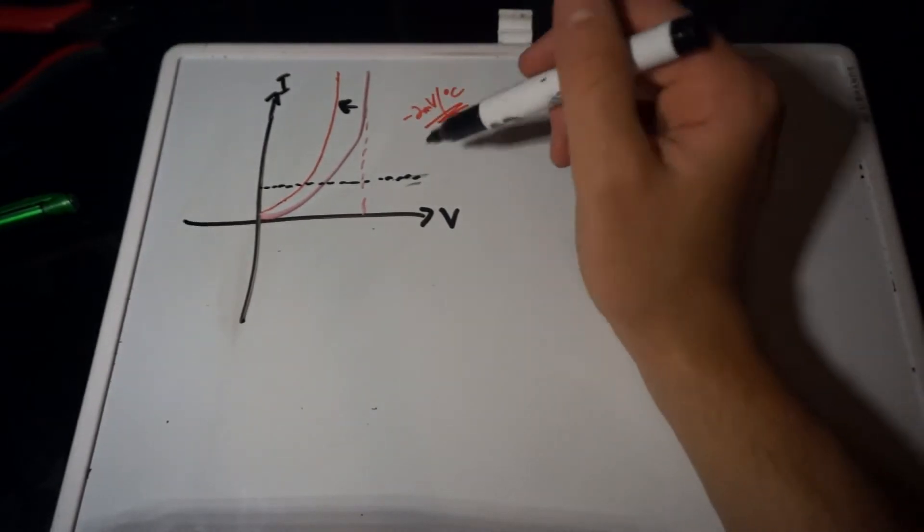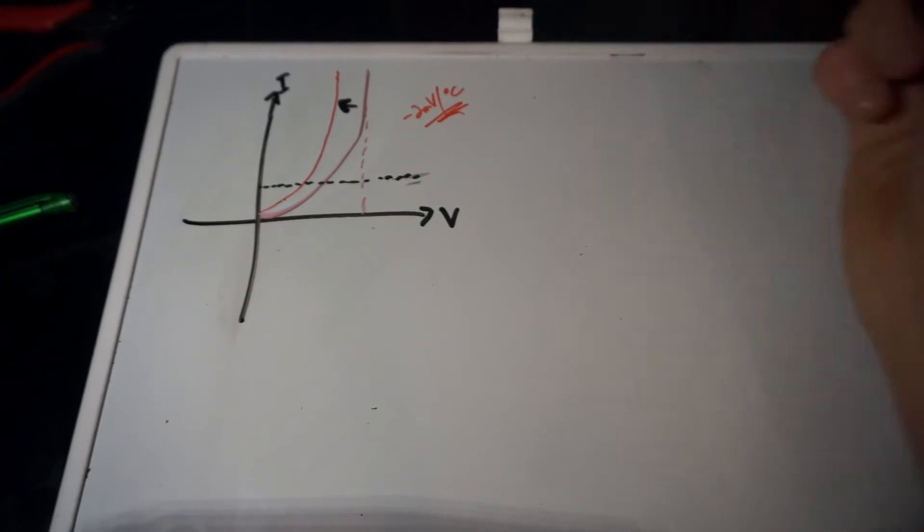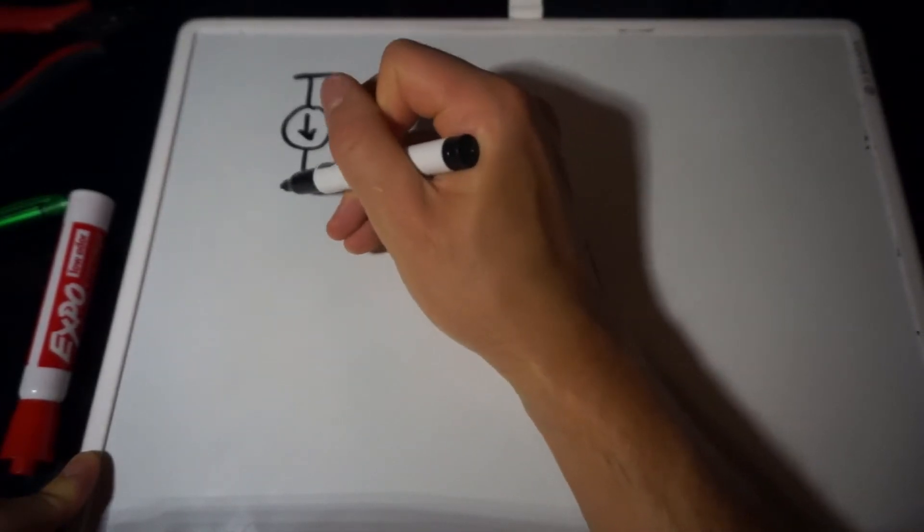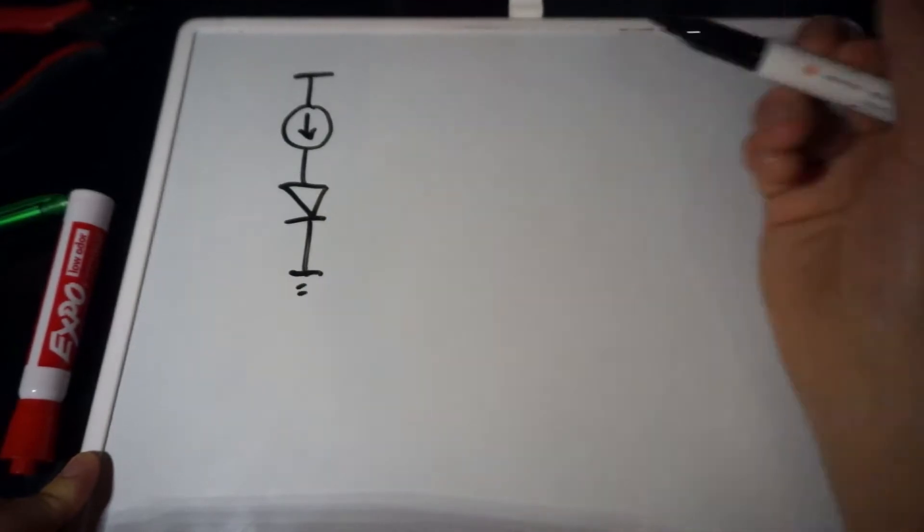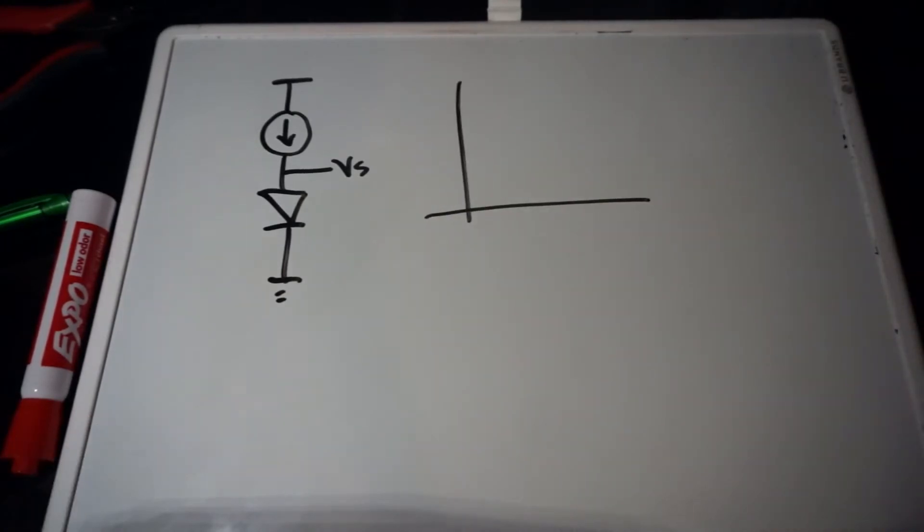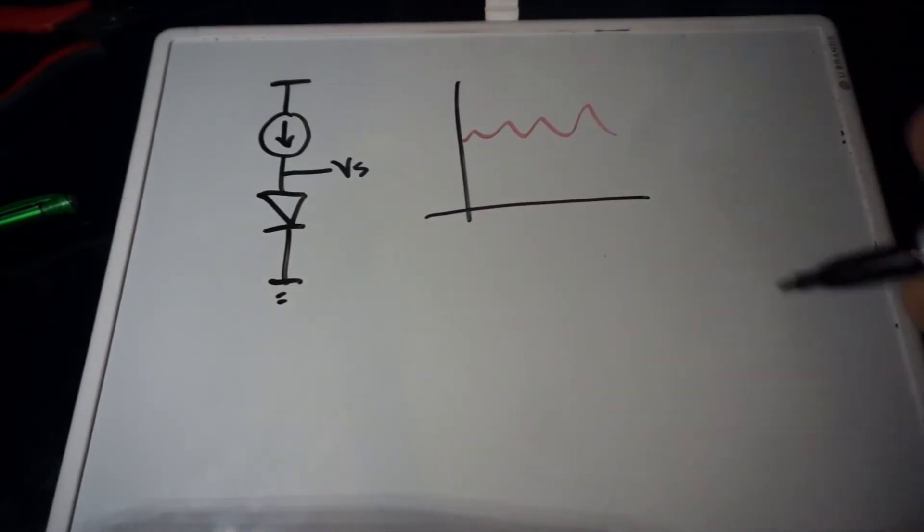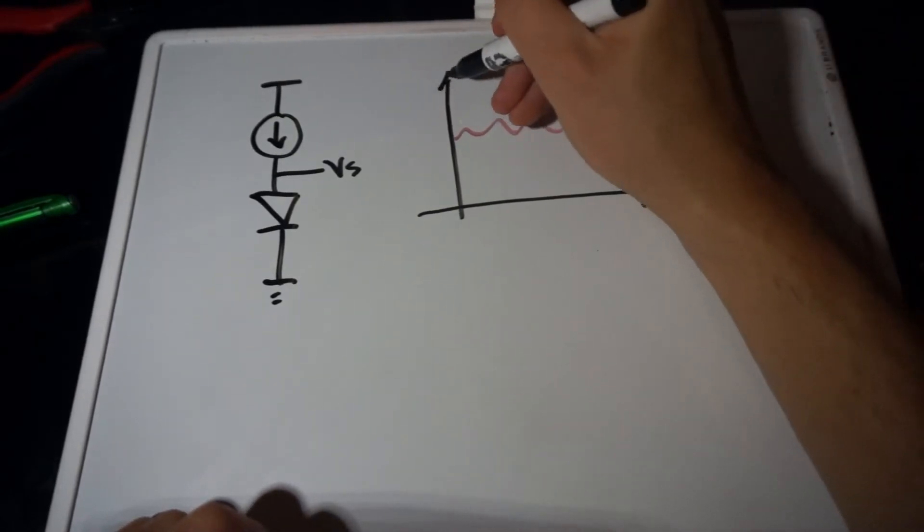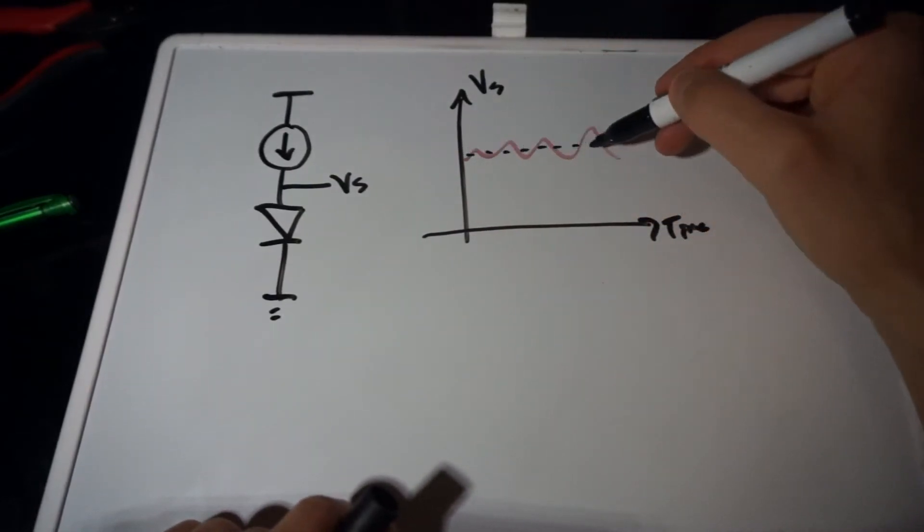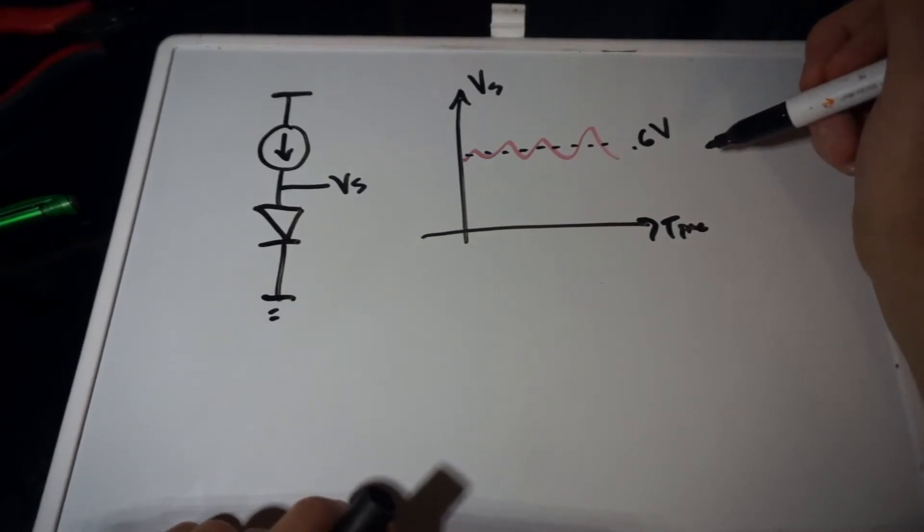And so the first order of business is setting a constant current, which was the reason that we did all the work to understand those constant current sources. So the basic idea of this temperature sensor is we're going to have a constant current source through the diode and take this as our signal voltage, which is going to end up looking like it's going to have a DC offset component and then a signal component. So this is, if this is time and Vs. And this is going to be, remember, so at about room temperature, this is about 0.6 volts for the typical on characteristic of a diode.